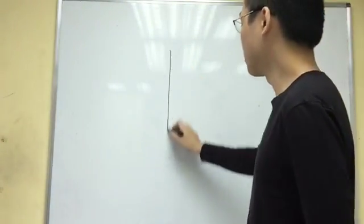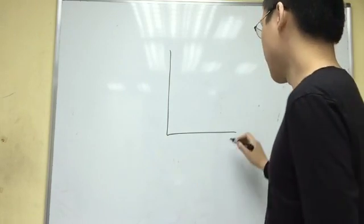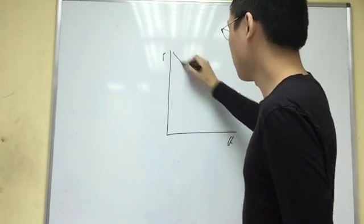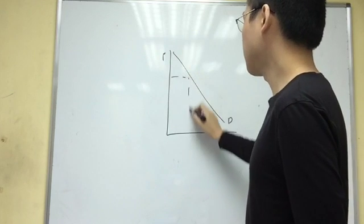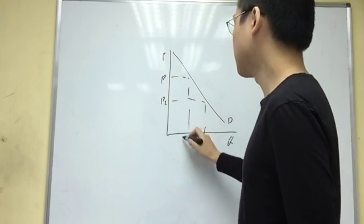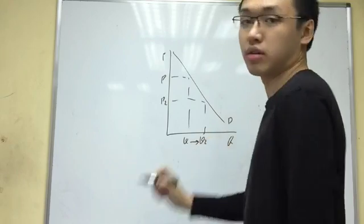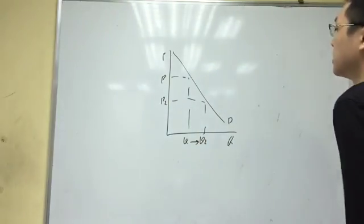Before we talk about PED, you need to first know about the very basic demand curve. Demand curve is downward sloping, which means that as the price of a good goes down, the quantity demanded of a good is going to rise. You should have learned that at school.